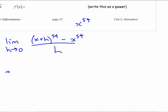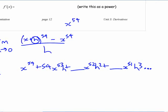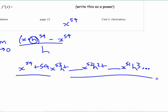If you did know what it was, it would be x to the 54 plus 54x to the 53h plus something x to the 52h squared plus something x to the 51h cubed. That should be a punishment. Your punishment is multiply this out.